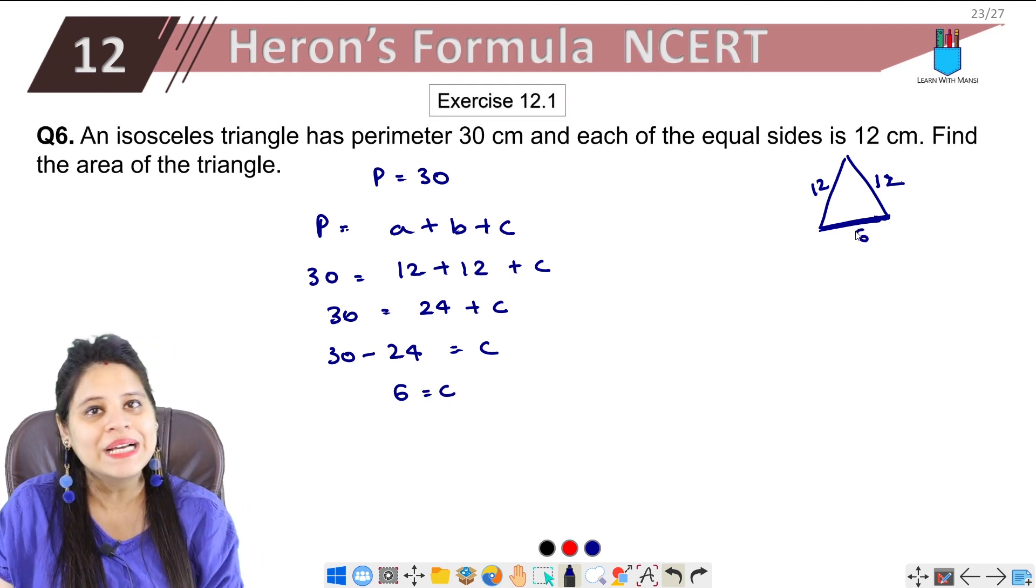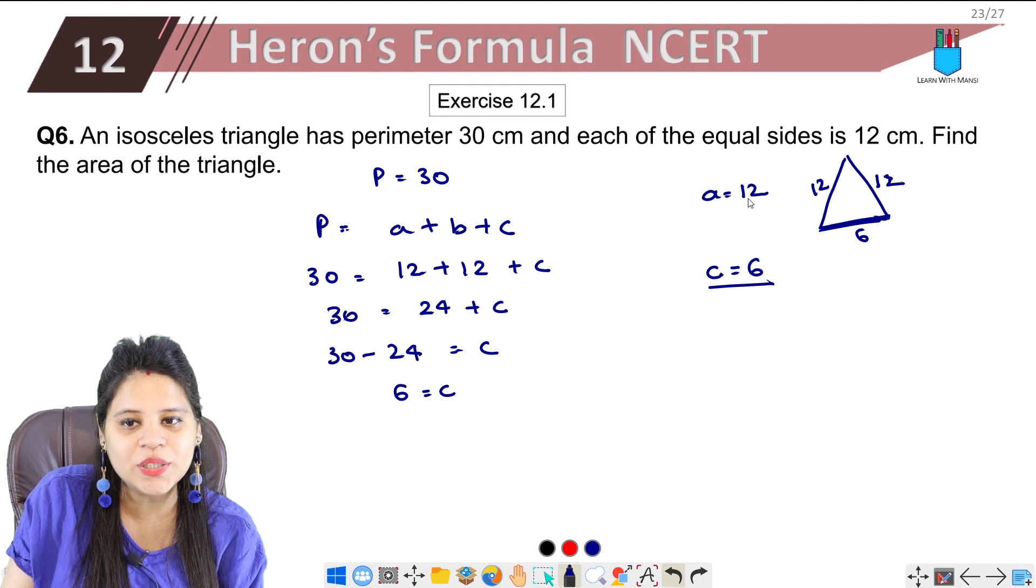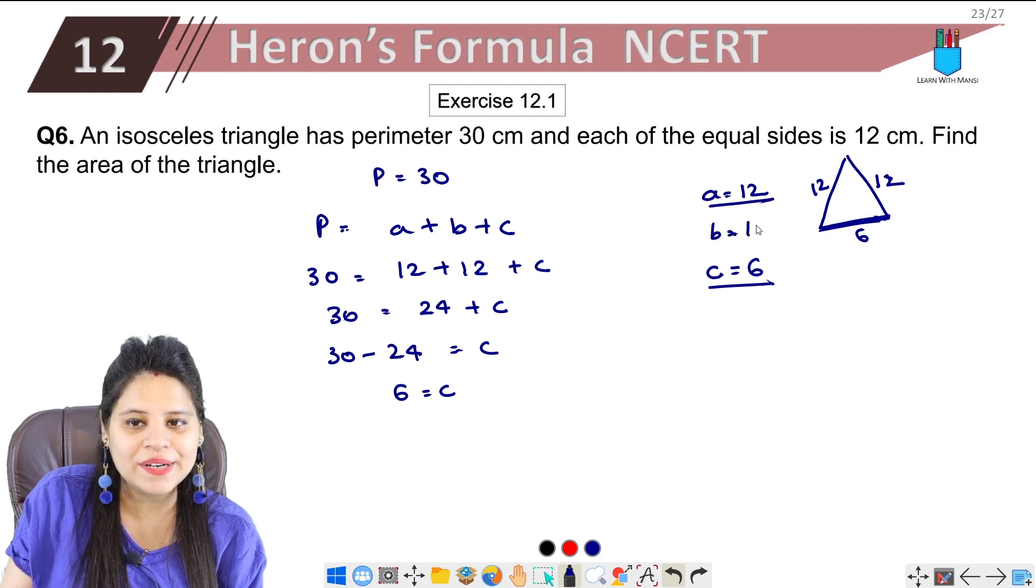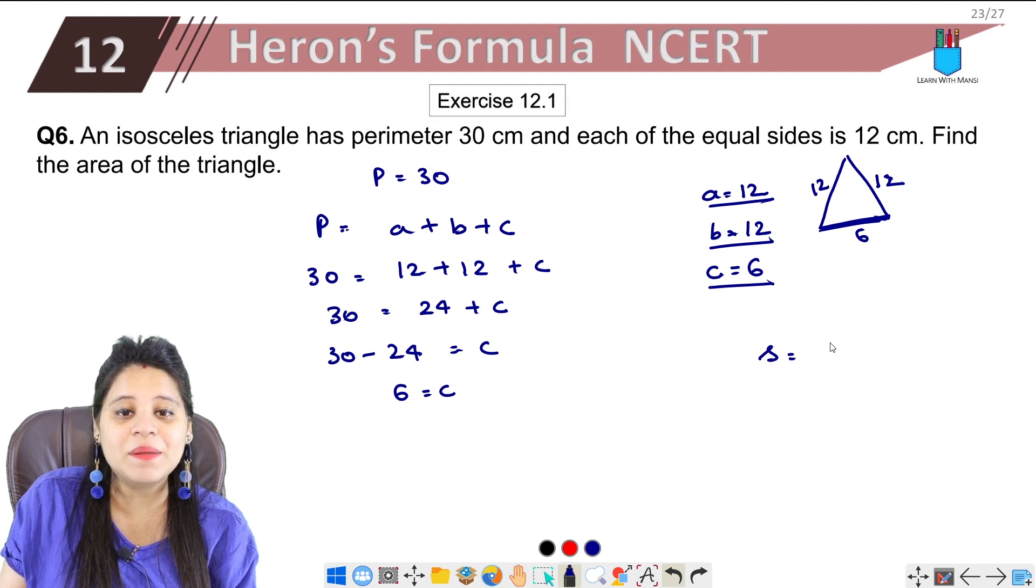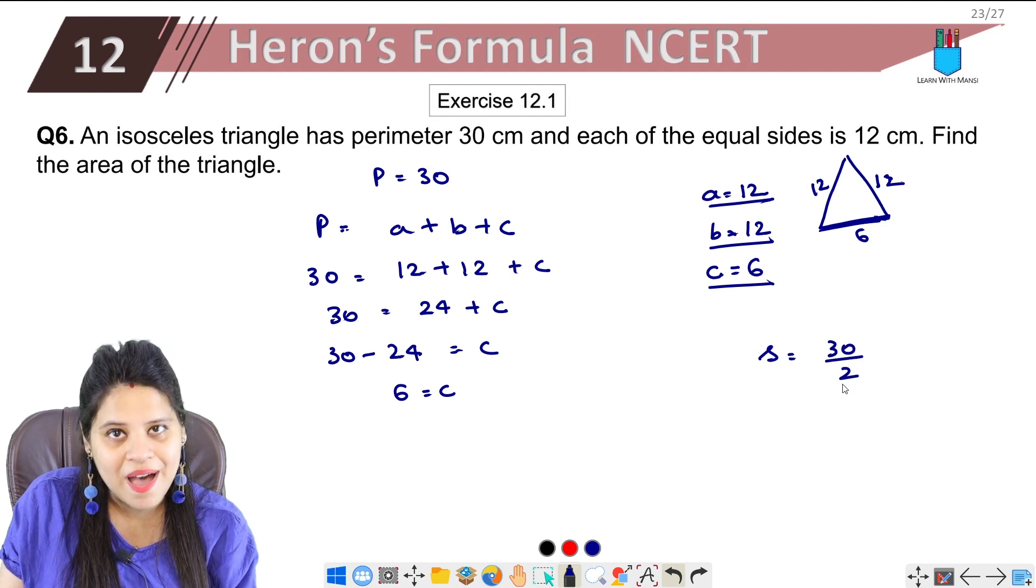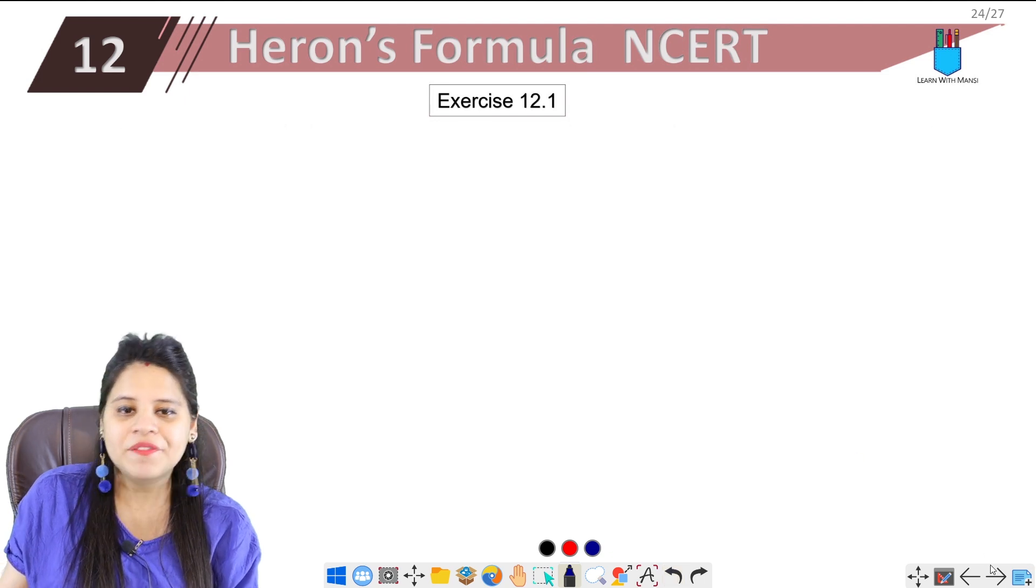One side we didn't have, now we have c equals 6. We already have 12 and 12. Now we know all three sides, so let's find the semi-perimeter, which will be half of the perimeter, which will be 15. So s equals 15.